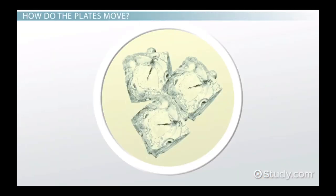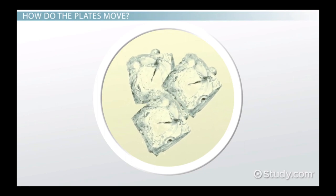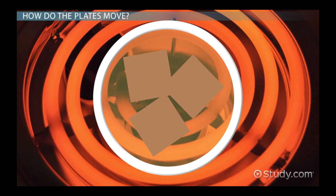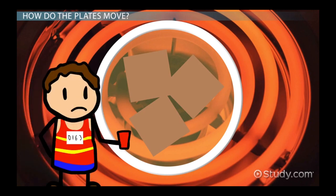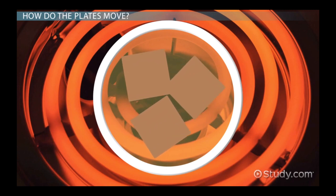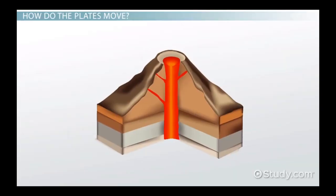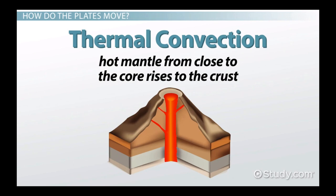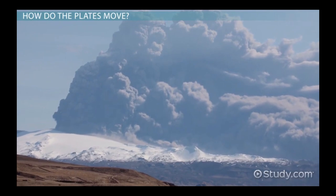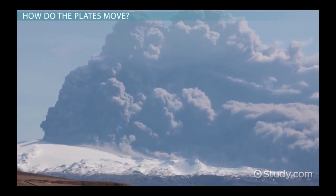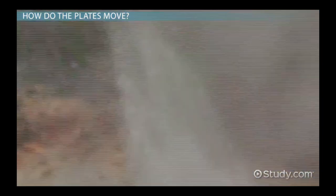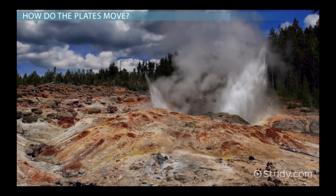Imagine ice cubes in boiling lemonade — the bubbling would cause the ice cubes to move. The same is happening under the earth's surface through a process known as thermal convection. Thermal convection happens when hot mantle from close to the core rises to the crust. In places with plenty of volcanoes, like Iceland and Yellowstone National Park, this heat warms up hot springs and geysers. This heat causes the plates to move, and the movement of other plates can create underground vacuums that pull a plate into a new position.